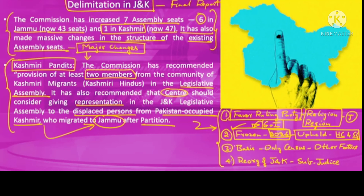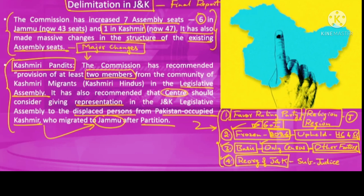Third, delimitation as per the Constitution should be carried out strictly on the basis of population data from the latest census. But in the new J&K delimitation, the commission referred to several local factors apart from census population data, which critics argue again violates the constitutional provision. Fourth, the J&K Reorganization Act of 2019 has been challenged in the Supreme Court and the matter is still sub-judice, making it inappropriate to conduct a delimitation exercise provided by that very same act.